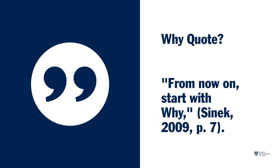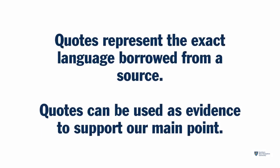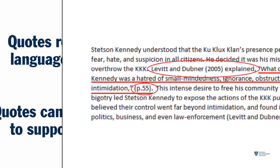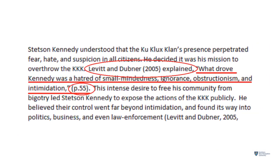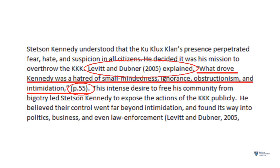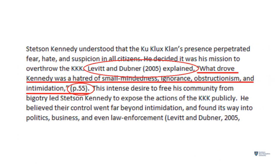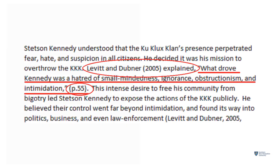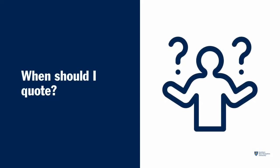You may have wondered why writers decide to use quotations in their writing. Quotations, or quotes, represent the exact language borrowed from a source, either written or spoken. Quotes are used in writing as evidence supporting your main point, and can be an impactful way to give your writing authority. So how do writers decide where to put quotes in the body of their paper?